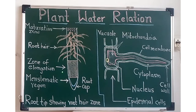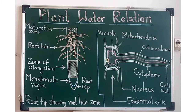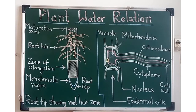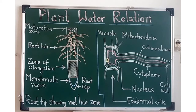The next region is called the region of elongation. In this region, the newly produced cells elongate rapidly. This region also helps in absorption of mineral salts, which act as building blocks for many compounds synthesized by the plants. This is the second region, the zone of elongation.